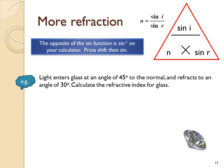Imagine light enters glass at an angle of 45 degrees to the normal and refracts to an angle of 30 degrees. Calculate the refractive index. The formula here is used in this form: sine i over sine r, which comes out to be 1.41. That's the refractive index of the glass and it doesn't have units. It's a ratio.